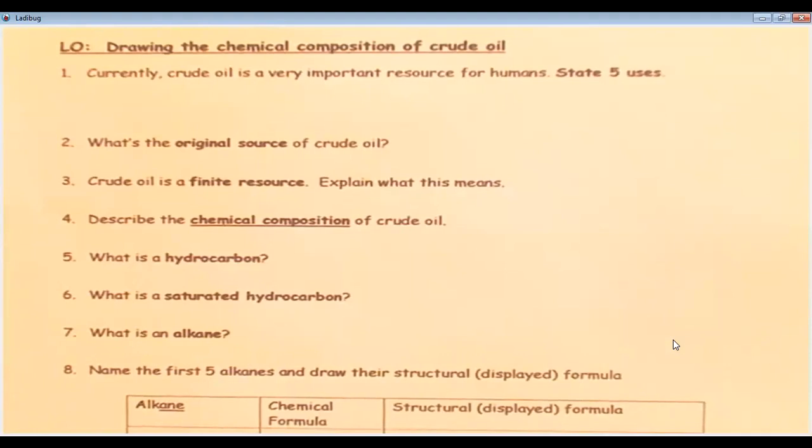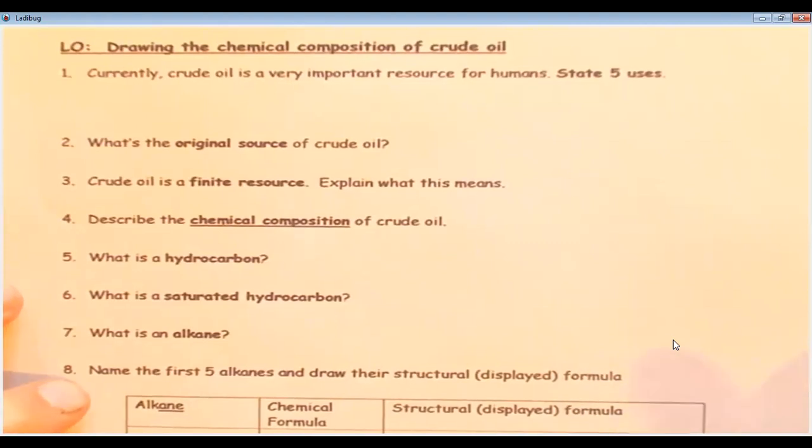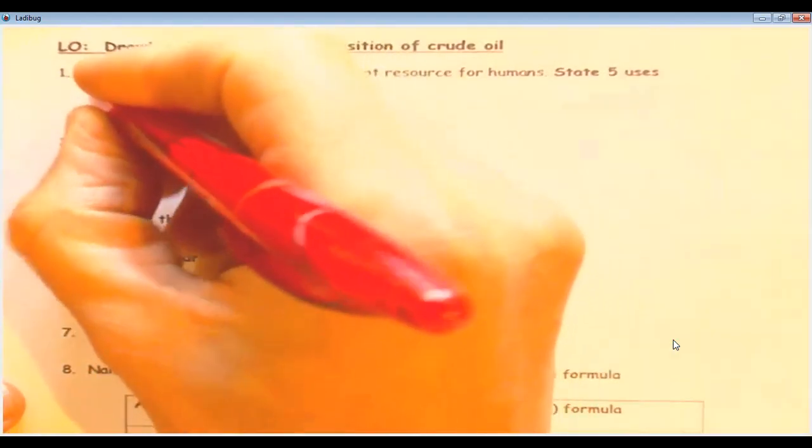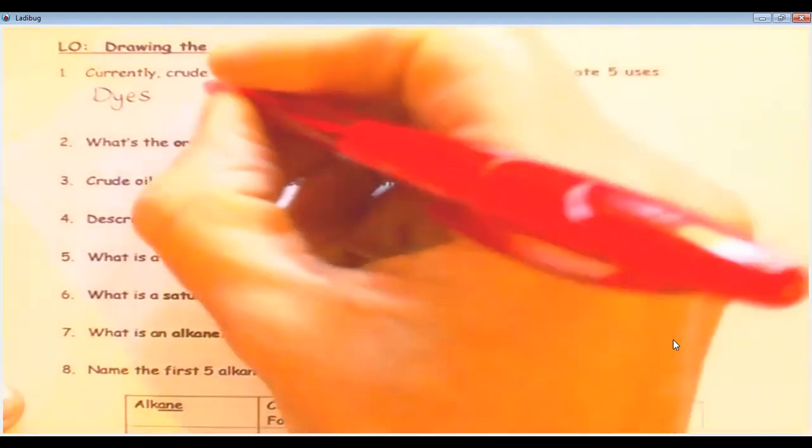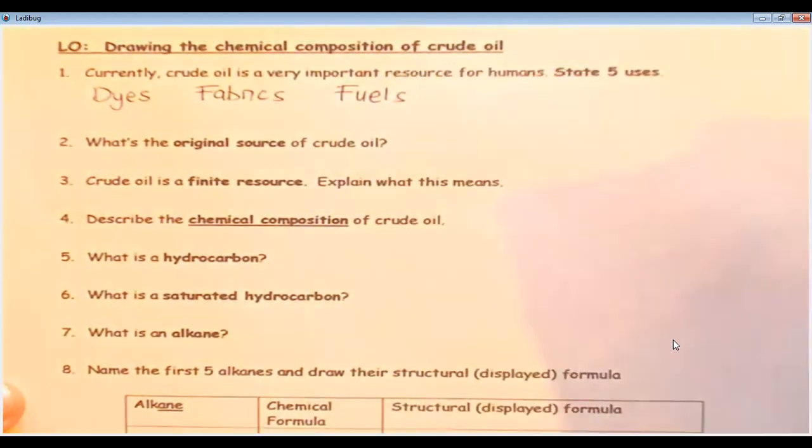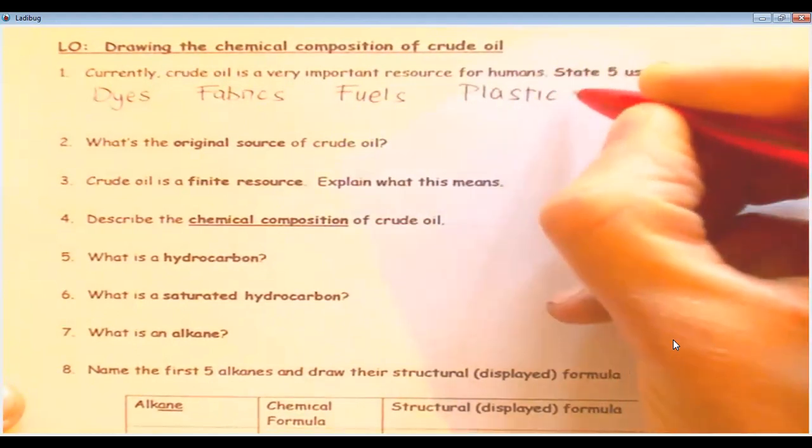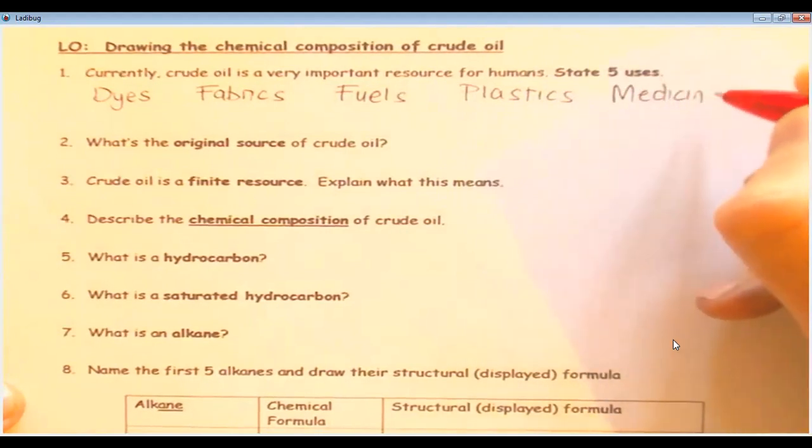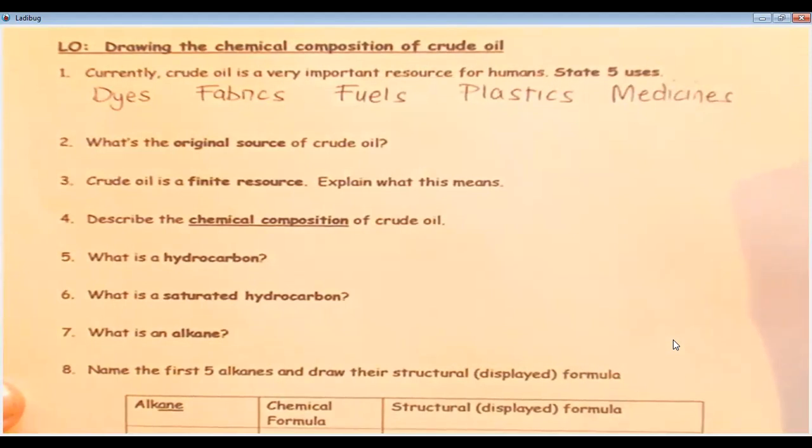Okay, so here we are looking at the chemical composition of crude oil today. Before we start that, I thought we'd just recap its uses. So our first question says, currently crude oil is a very important resource for humans. State five uses. And five uses that I just showed you within the PowerPoint there were these. So they were dyes, fabrics, fuels, plastics, medicines. And there's lots more, but those are five important ones. So it's an incredibly useful resource, starting material for lots of different things that we use.